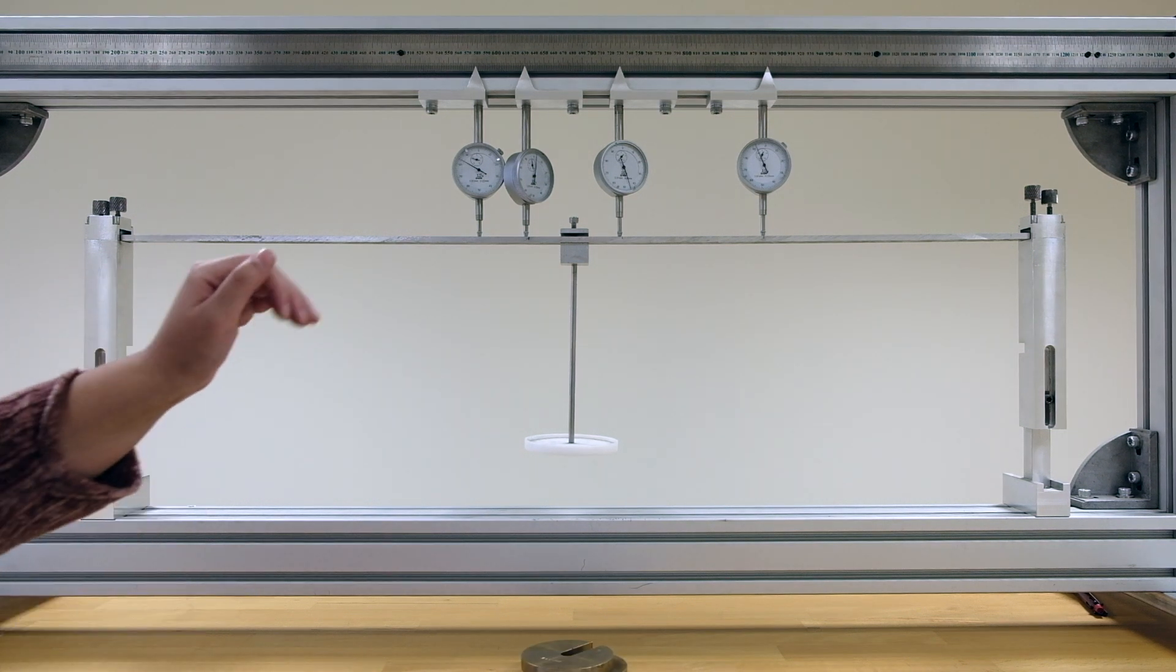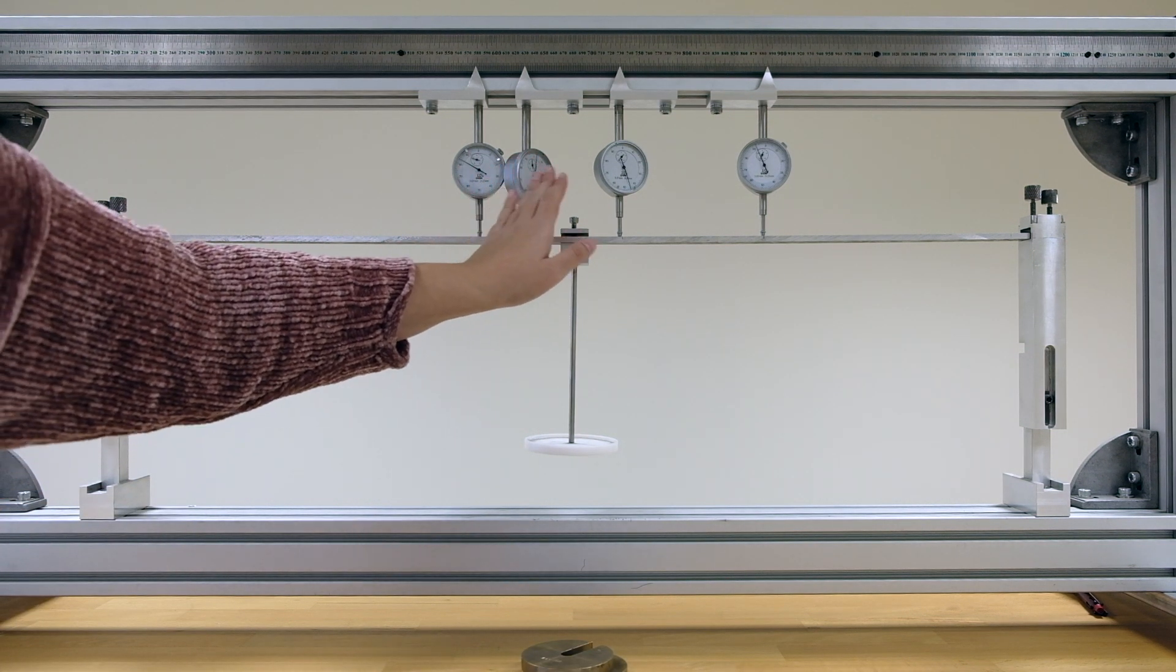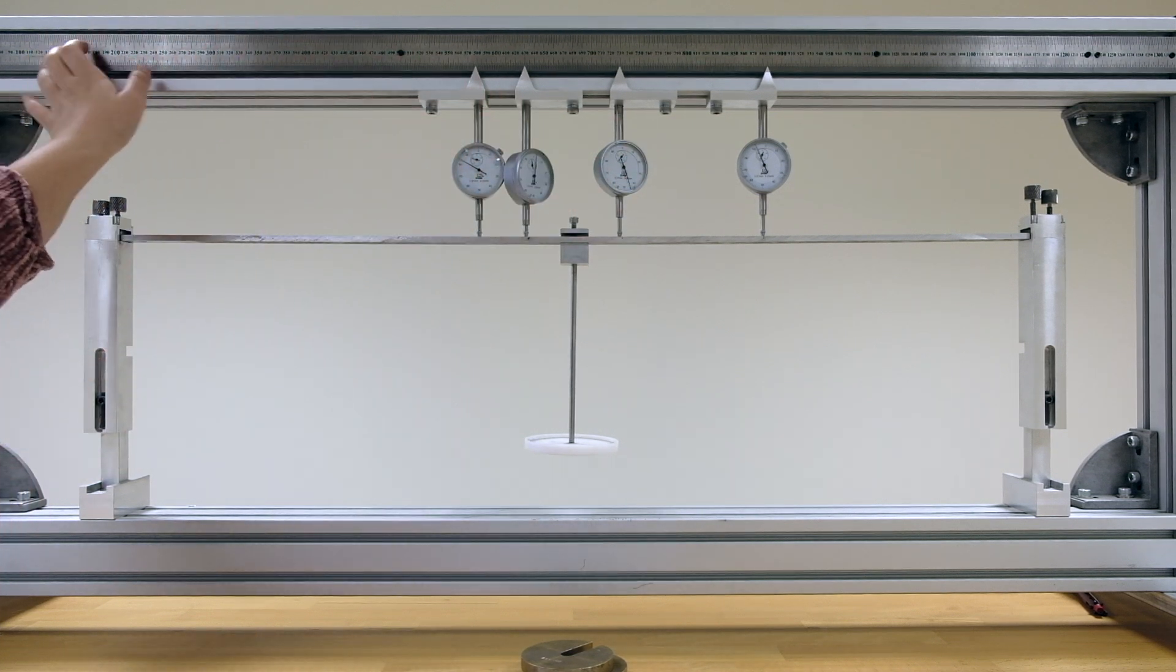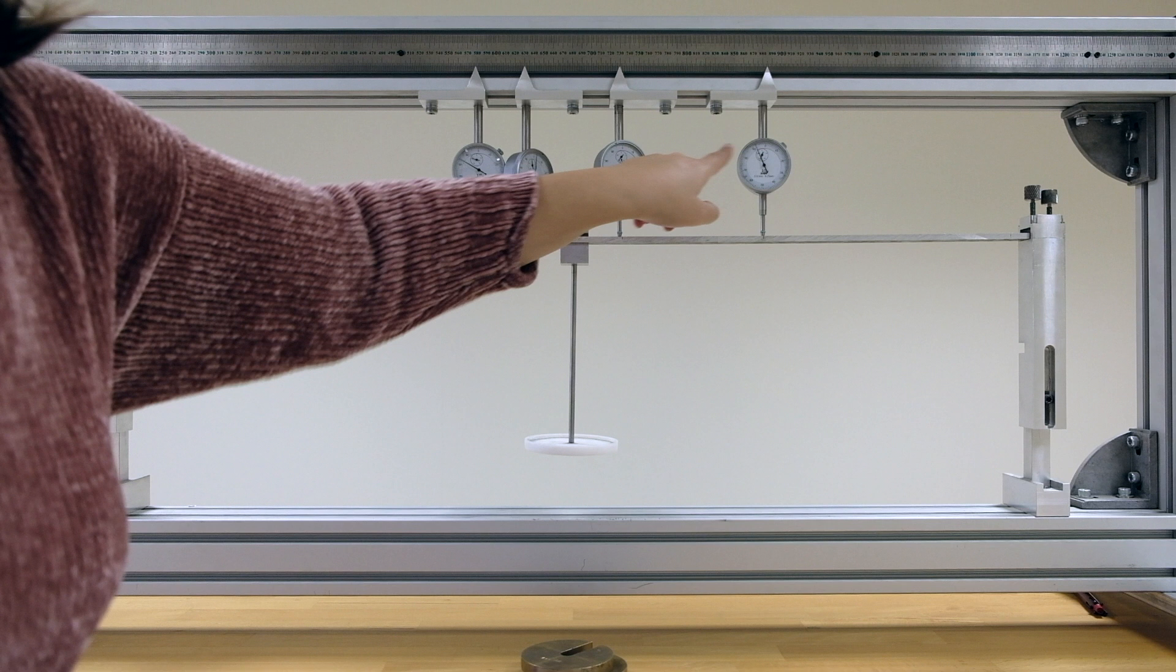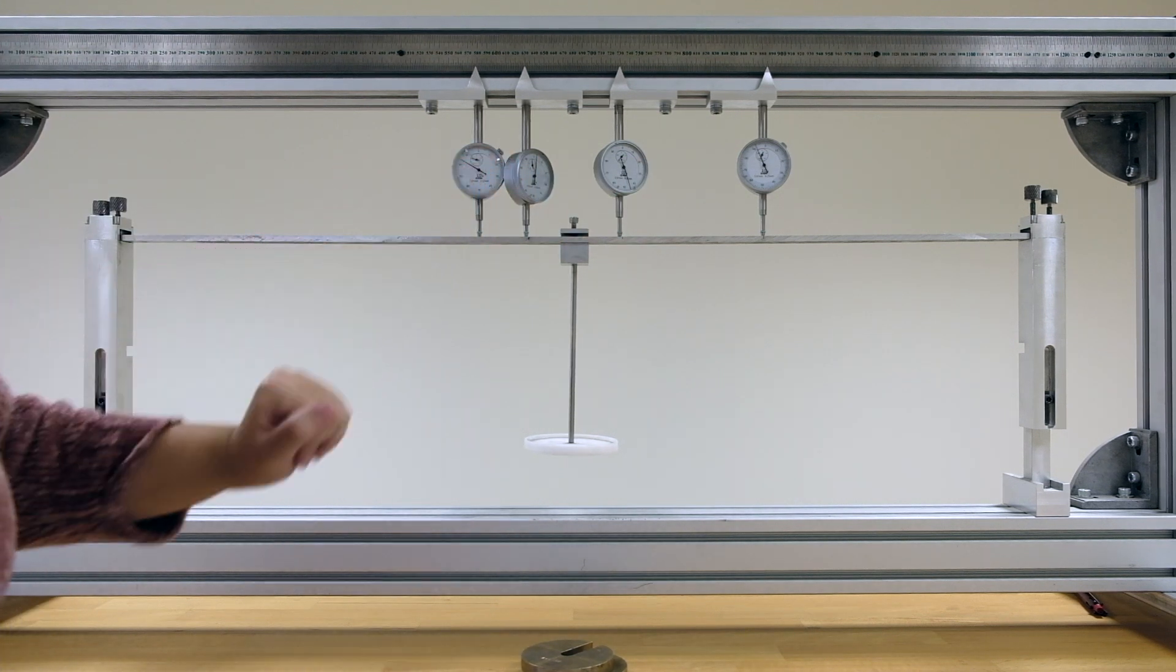Also, before you start, you should look at the positions of each of these dials from this ruler up top, and then record the position of each of these dials, which you will be getting the readings from.